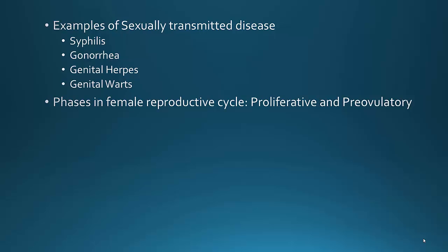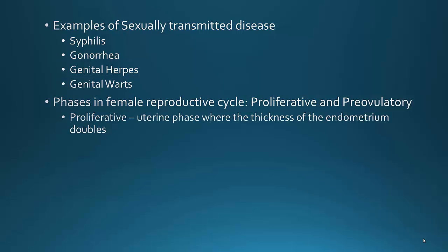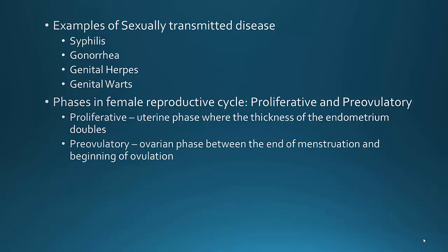You also need to know the phases in the female reproductive cycle, like the proliferative and pre-ovulatory. Proliferative is the uterine phase — it involves thickening of the endometrium, which doubles in preparation for potential implantation of a fertilized egg. Pre-ovulatory is the ovarian phase between the end of menstruation and the beginning of ovulation. These two actually take place at the same time, but one is at the uterus level and the other at the ovary.